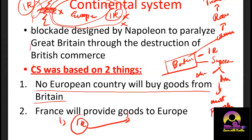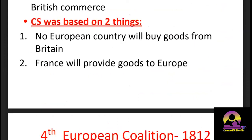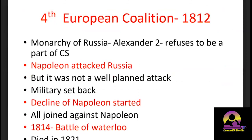Initially, all European countries had no choice but to accept the Continental System. However, French production could not meet the demand of Europe — Britain was an already-established manufacturer and France could not match its production. This led to inflation, price rises, and demand-supply gaps across Europe. Nobody dared to withdraw from the system out of fear of being attacked by France. Finally, the Tsar of Russia, Alexander I, refused to be part of the system and broke out.